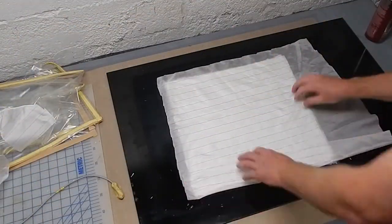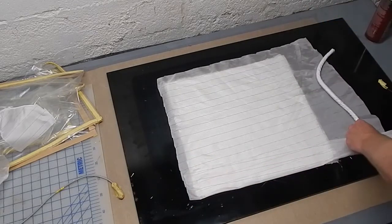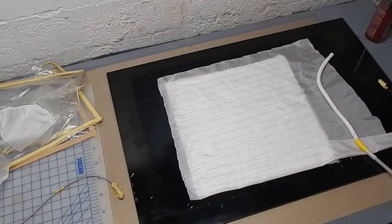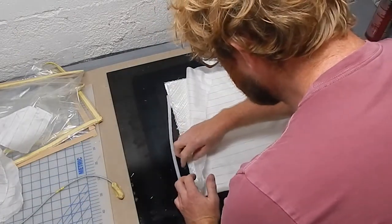Fold back the peel ply so there's not a lot of extra peel ply around the perimeter. I could have cut it off. I just folded it back because I was being lazy.